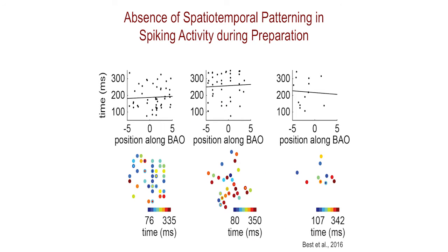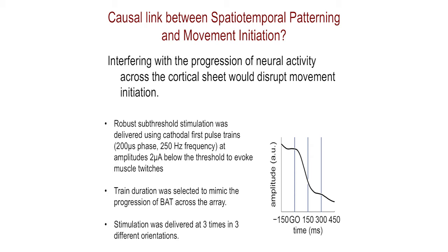Interestingly, if we look during the instruction period — that preparation period where the monkey's just holding still and not doing anything — we don't see any kind of patterned activity. So this is something unique to the process of actively initiating a movement and starting to move the arm. It's not just a property of cortical neurons. So what we wanted to do then was really try and understand: is this really something important for initiating movement? If we didn't have this kind of thing happening, could we still initiate a movement? The experiment we wanted to take a look at was to establish some kind of causal link between the spatiotemporal pattern and movement initiation.